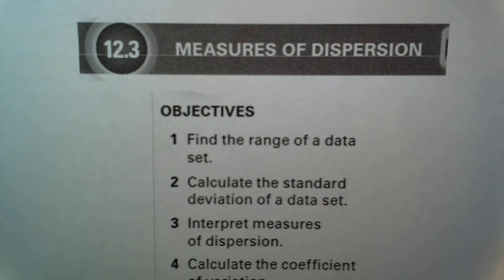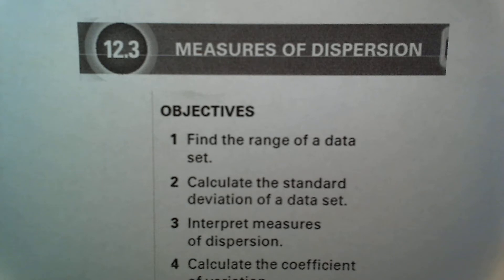This is section 12.3, Measures of Dispersion, and there are four objectives: to find the range of a data set, to calculate the standard deviation of a data set, to interpret measures of dispersion, and to calculate the coefficient of variation.